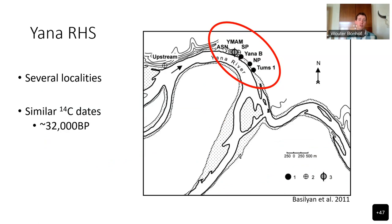The Yana Rhinoceros Horn site is actually more of a site complex, consisting of several sites along the Yana riverbank. New carbon dates from all of these sites are very similar, all falling around 32,000 years ago, and the technological culture is very similar, so it is believed to represent one location, one occupation phase spread over different localities.